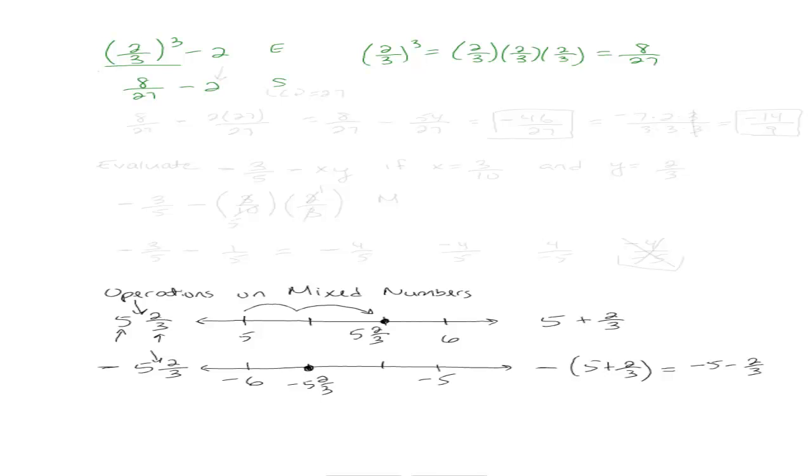Subtract. So what do I need to do to subtract these two fractions? The LCD. What is the LCD? 27. So I need to multiply the second number by 27. So this becomes 8 over 27 minus 2 times 27 over 27.